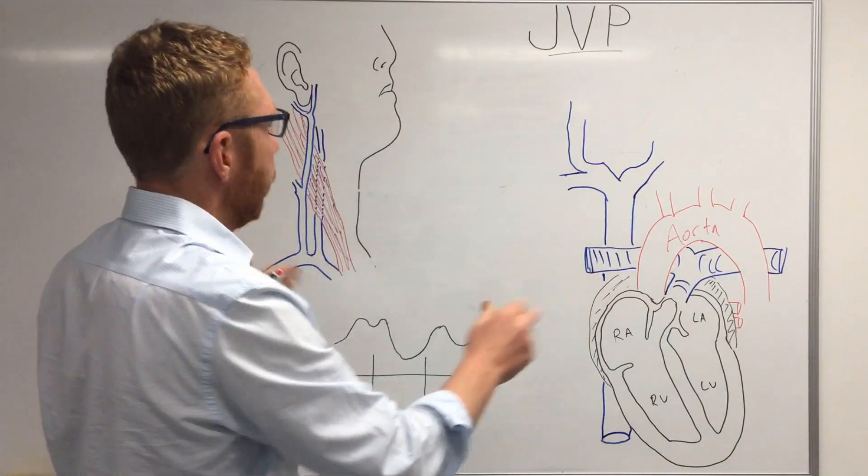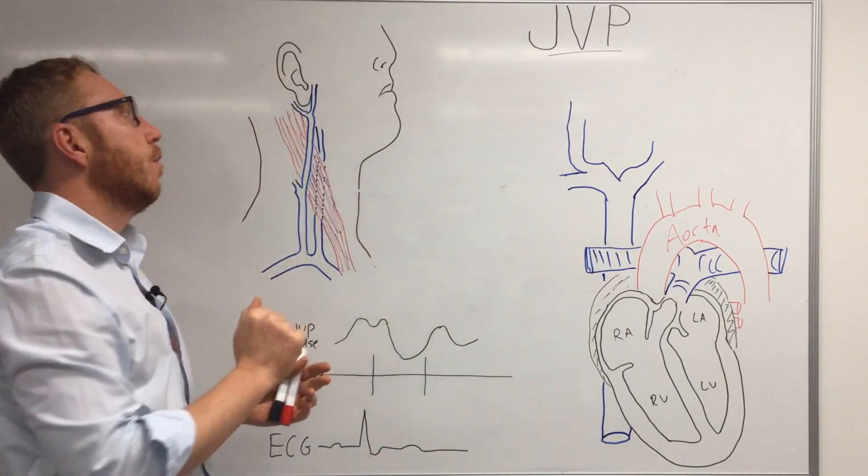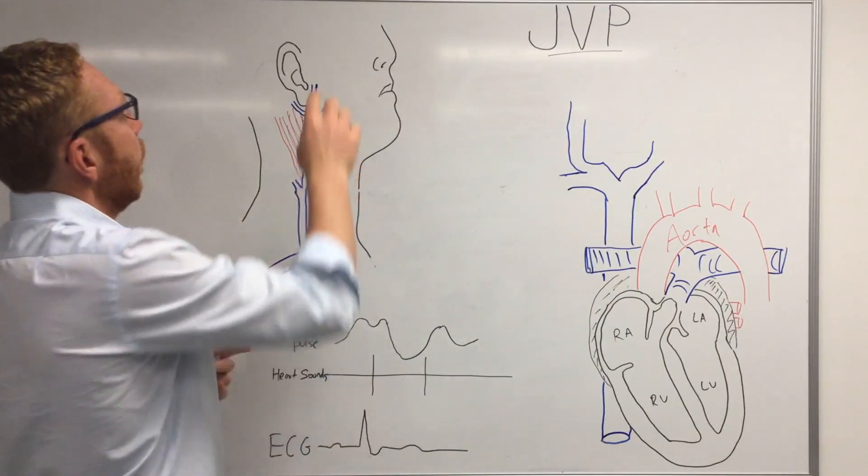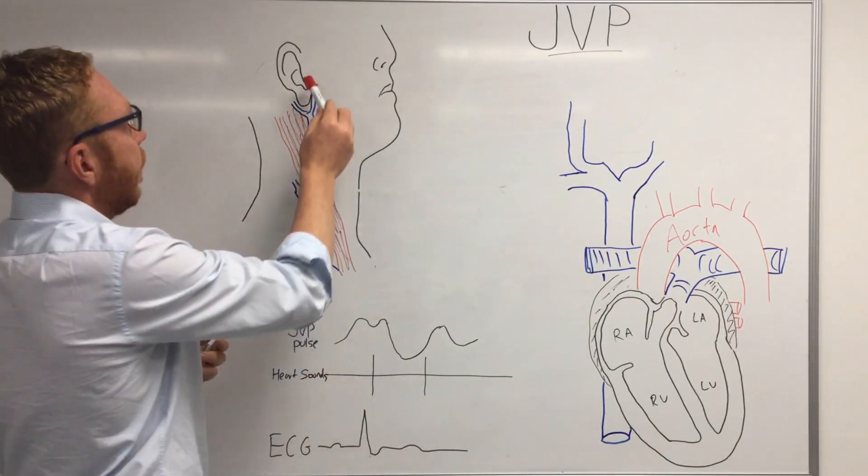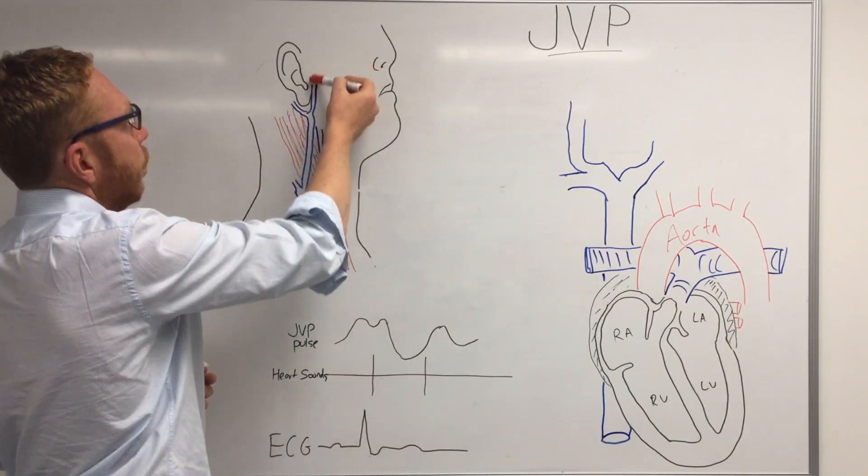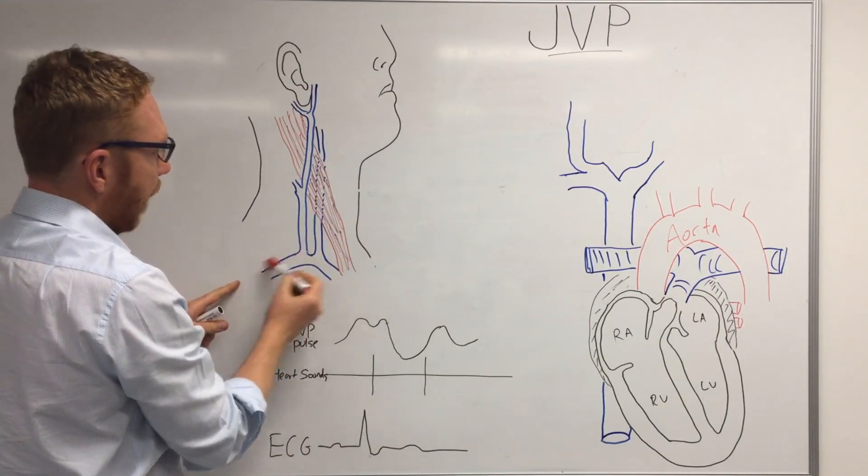So firstly let's get our bearings. This image here is looking at a side view of the right side of the face. You can see in blue are the veins, so this one here is the external jugular vein which comes from the retromandibular vein coming down and joining the subclavian vein.